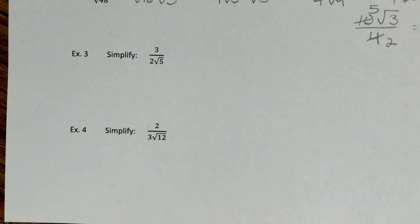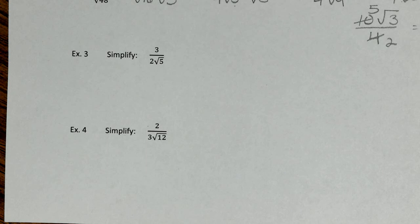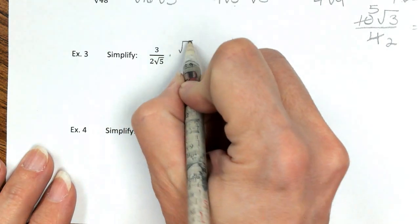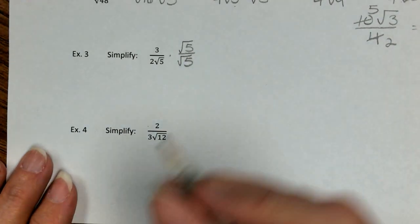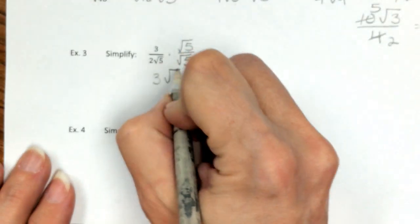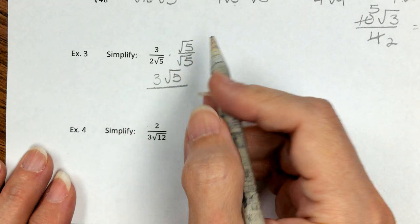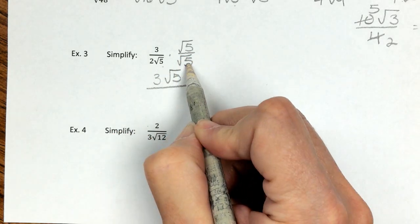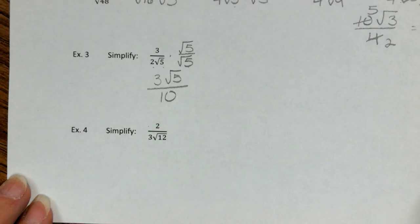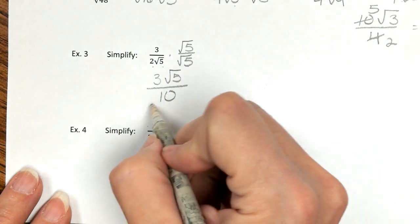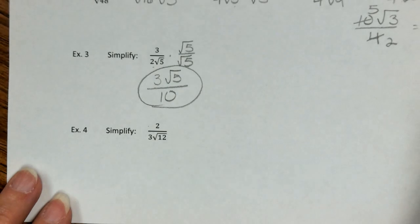Example 3: there's nothing to simplify under the radical — the root 5 does not simplify; we just can't leave it in the denominator. So we multiply numerator and denominator by the square root of 5. That gives us 3 root 5 over root 5 times root 5, which is 5, times 2, giving us 5 times 2 equals 10. So the answer is 3 over 10, which doesn't reduce. That one's done.